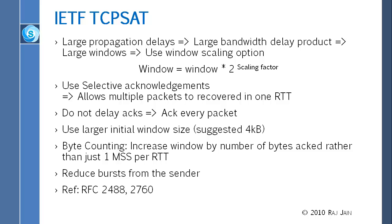There is a new feature which was introduced into TCP because of this, called the scaling factor. The window used to be specified as a number, but now instead of that, they have two fields: a number and a factor. The second field indicates the factor — you take two raised to that factor and multiply it with your window, and that is your real window. That factor basically allows you to specify very large windows required for high-speed satellite links.